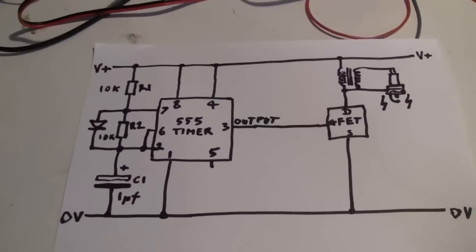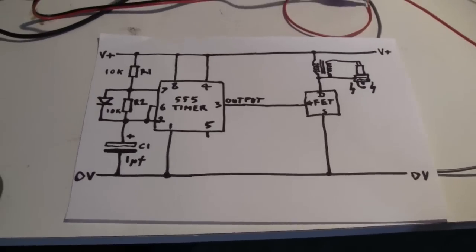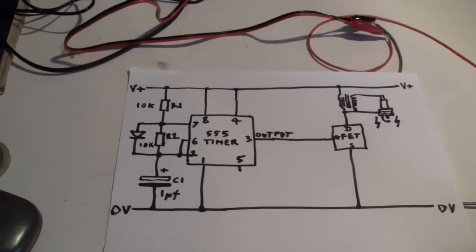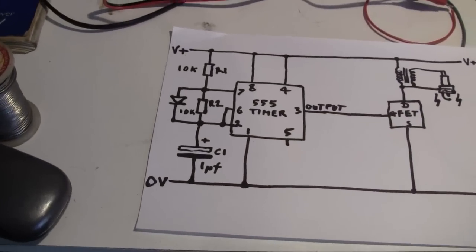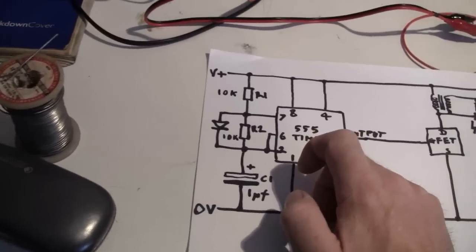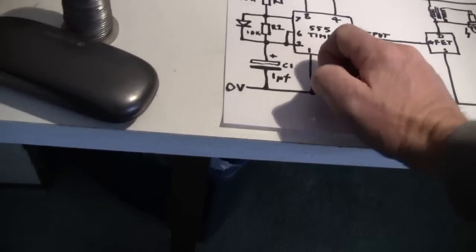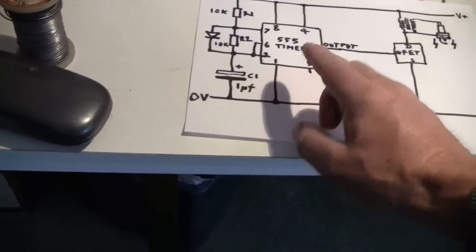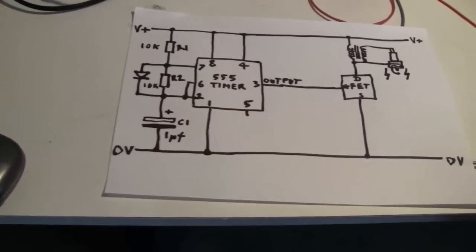It's a 555 timer chip set up in its astable mode, which means it gives repeating pulses out of the output, which is pin 3. The two resistors, R1 and R2, I've made 10K. And I've found if I put a 1 microfarad capacitor in there, which is C1 on the circuit, it gives roughly 300 pulses a second out of the output.